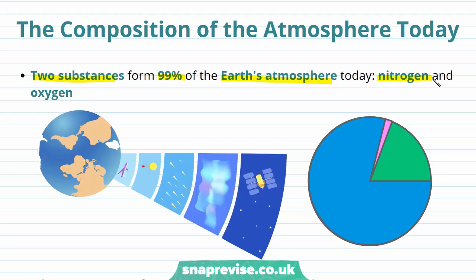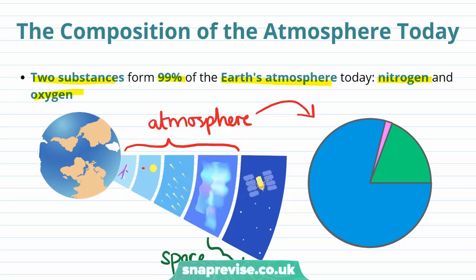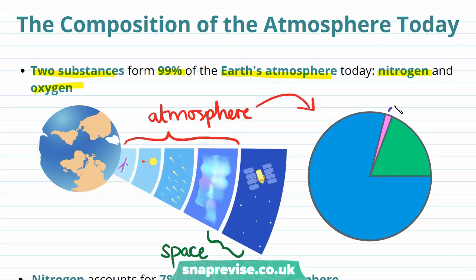These two substances are nitrogen and oxygen. In this diagram on the left-hand side you can see different layers of what is known as the atmosphere, which are the layers of gases surrounding the Earth held there by the Earth's gravity. Outside the atmosphere we reach space. On the right-hand side we have a pie chart showing the component parts of the Earth's atmosphere, dominated by nitrogen in blue and oxygen in green, with all other gases making up the remainder.